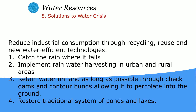To save water in industries, we can collect rainwater where it falls and implement rainwater harvesting in urban and rural areas. Tamil Nadu is a state where the government has made it compulsory to install rainwater harvesting systems in every building. We should also retain water on land as long as possible through check dams and contour dams, allowing it to percolate into the ground, and restore traditional systems of ponds and lakes.